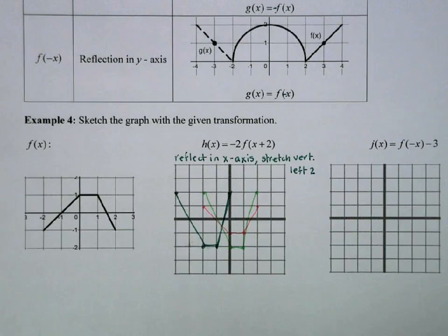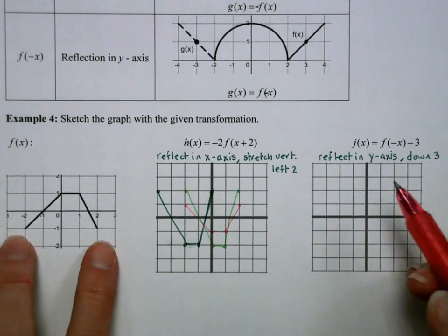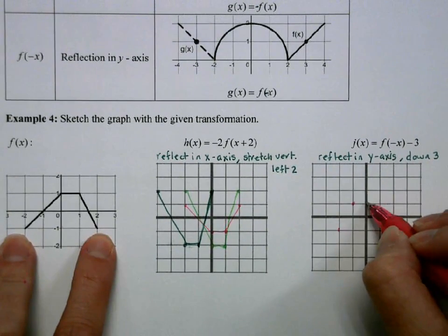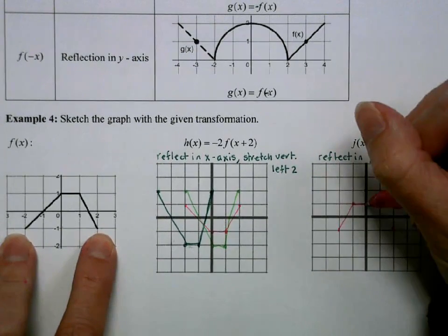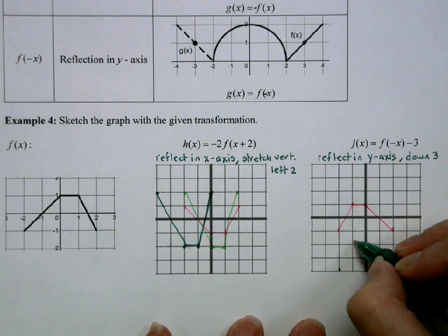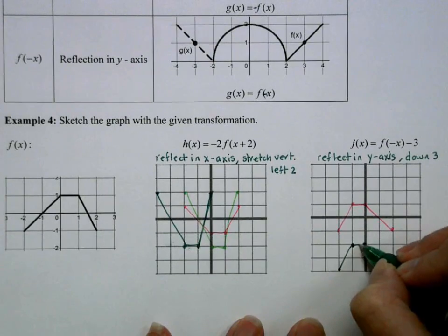In the next example, we have two transformations: we're going to reflect it in the y-axis and move it down 3. I'll do this in stages. First, I take the whole thing and mirror it across the y-axis so the graph is reflected. Then we move it down 3 units.